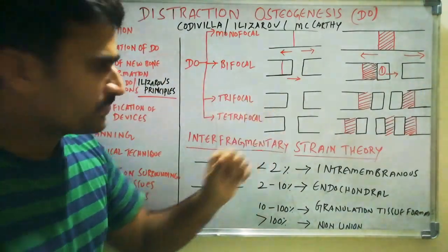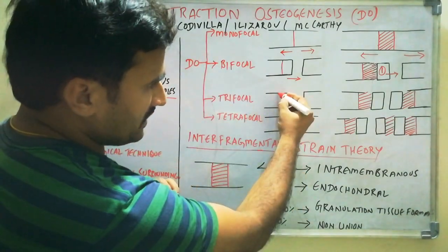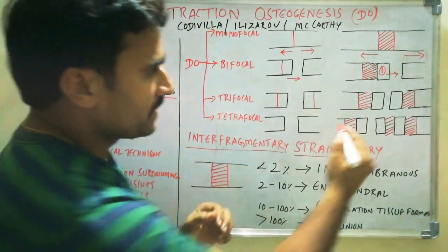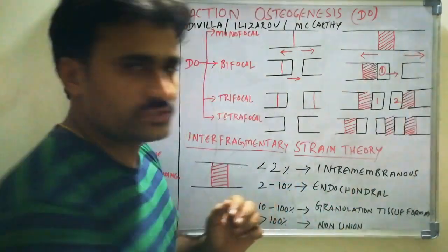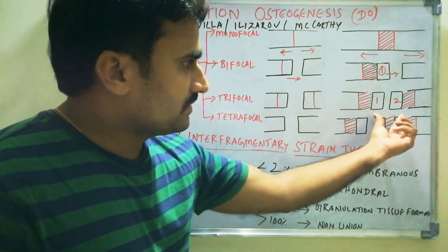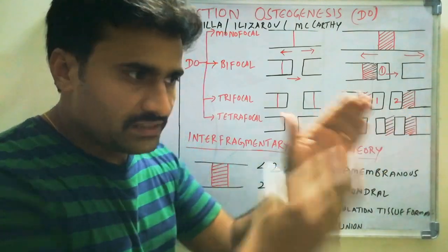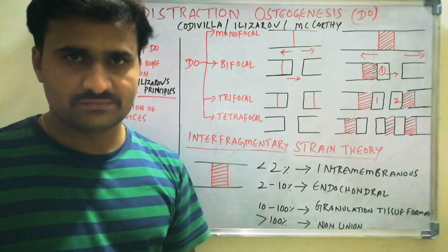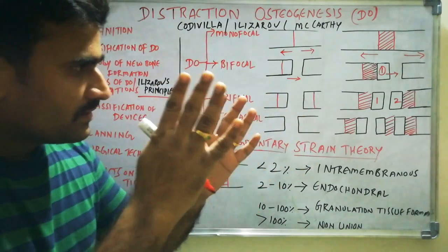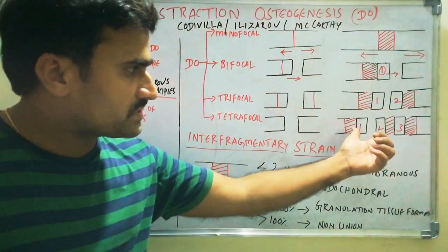In trifocal, the same concept applies but we prepare two transport segments — one osteotomy on each side of the defect. Bone formation occurs behind each transport segment, and union occurs between the two bone fragments in the midline of the defect. In tetrafocal, there are three transporting segments, and bone formation occurs behind each transport segment.